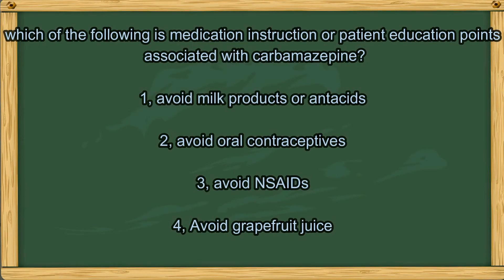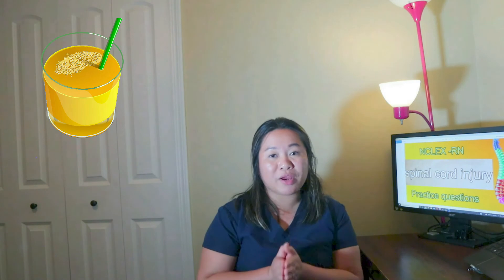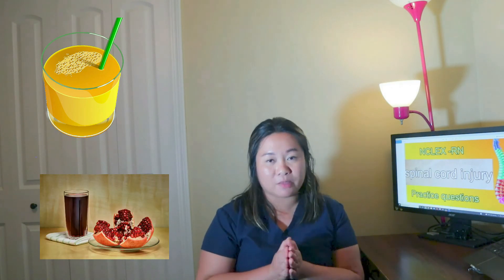Which of the following is a medication instruction or patient education point associated with carbamazepine? Option 1. Avoid milk products or antacids. Option 2. Avoid oral contraceptives. Option 3. Avoid insects. Option 4. Avoid grapefruit juice. The answer is number 4. Since grapefruit juice prevents normal drug metabolism and increases serum levels, do not administer carbamazepine with grapefruit juice — it increases the amount to toxic plasma levels. And remember, not just grapefruit juice: other citrus fruits like orange juice or pomegranate juice should also be avoided with carbamazepine.